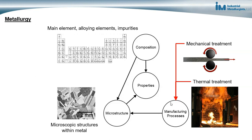The other aspect of metallurgy is understanding the effects of manufacturing processes — mechanical treatment and thermal treatment — on the microstructure, combined with the effects of composition. We can take the same material and process it in different ways to get different microstructures and different properties. When we understand all these things, it's possible to identify materials for components, identify manufacturing processes, select processes to get the desired microstructure and properties, develop manufacturing processes, and understand the cause of problems when they arise.